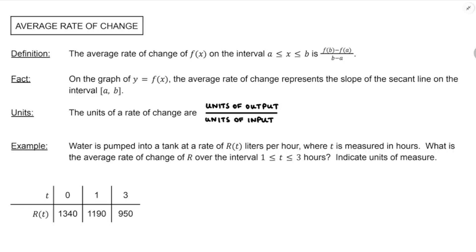Okay, and for a quick example, I might tell you, water is pumped into a tank. It's a very classic calculus situation. At a rate of r of t liters per hour, where t is measured in hours, what's the average rate of change of r over the time interval one to three? Indicate units of measures. So this is kind of a two-part question. What's the average rate of change? What are the units? So we're going to start off by computing that average rate of change using the formula. We're going to be interested in r over one to three.